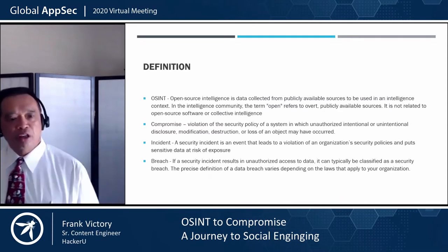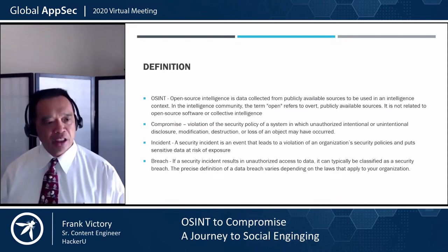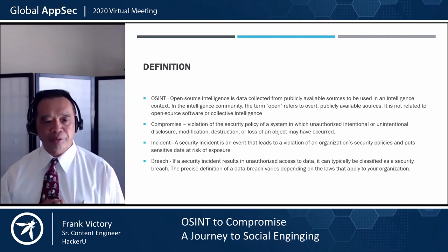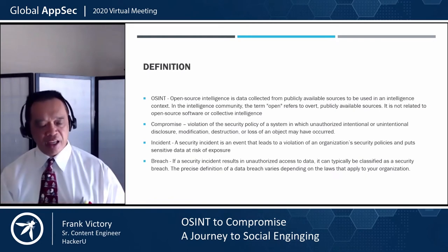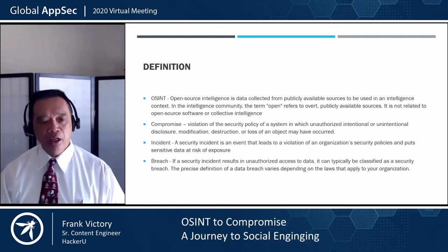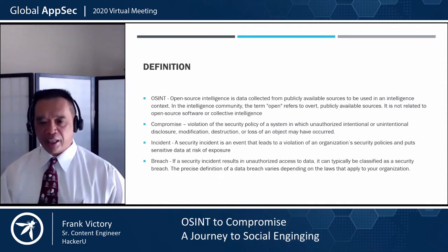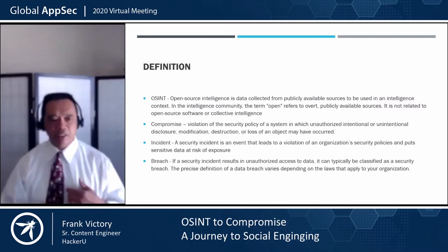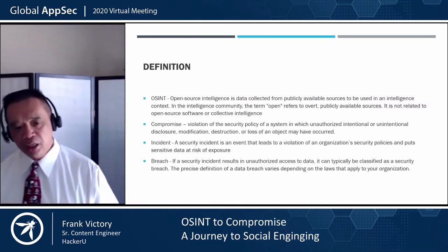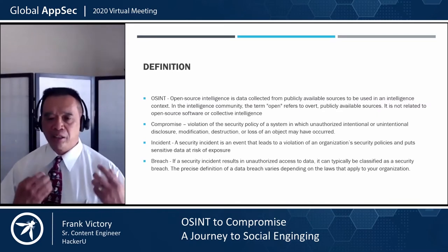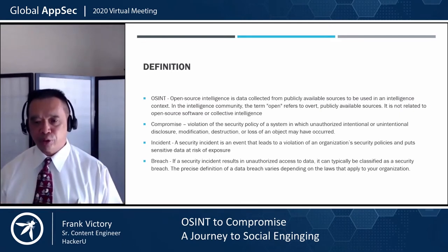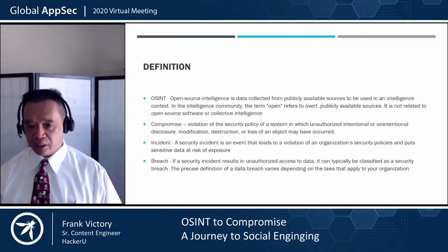OSINT — open source intelligence — is data collected from publicly available sources on the internet, which includes unauthorized, intentional, or unintentional disclosure, modification, destruction, or loss of an object. Essentially, you have an incident — which is the next definition — meaning someone has gotten into your system. The difference between a compromise and a breach is that a breach means they were actually able to exfiltrate the data and you've found that data on some source not owned by the company.